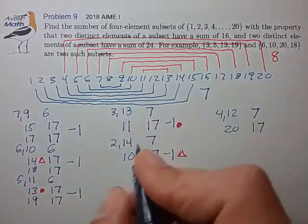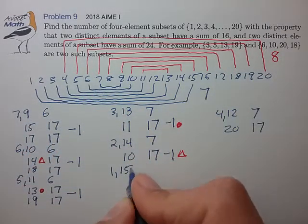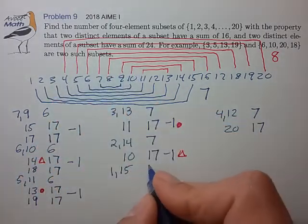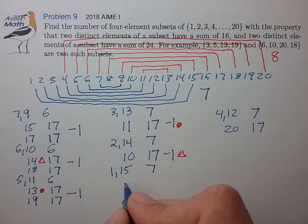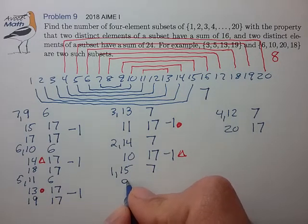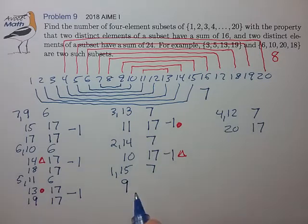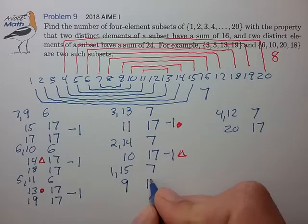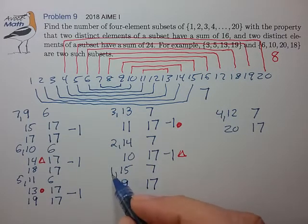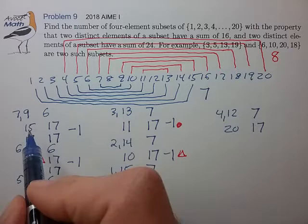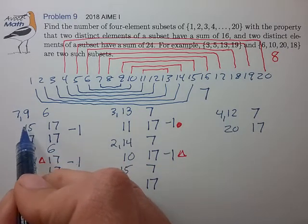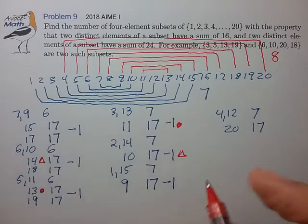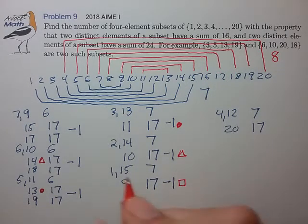And finally, if the blue pair is 1, 15, then there are 7 red pairs that don't overlap. If it does overlap, then the only way that it can occur is for the third element to be 9. And in that case, the fourth element could be selected among any of the 17 remaining numbers. But here again, the 1, 15, 9 will overcount by 1 an element that we'd previously counted. So let's make a correction for minus 1 and just make a little notation to indicate the case that we're correcting for.